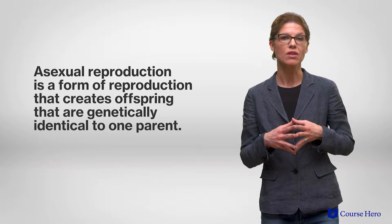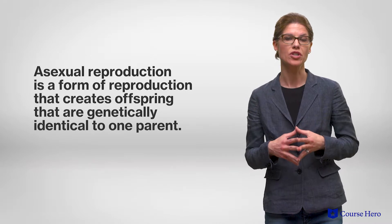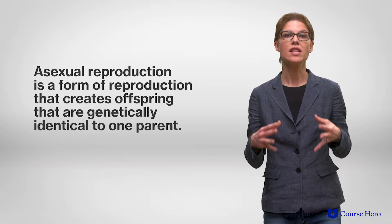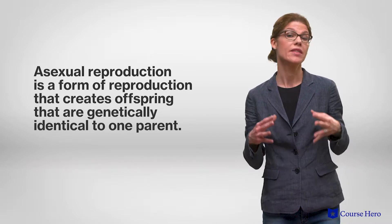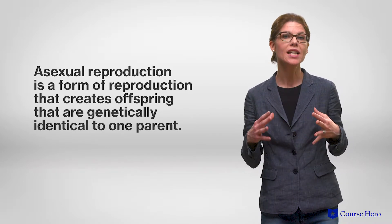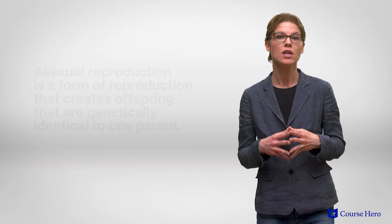Asexual reproduction is a form of reproduction that creates offspring that are genetically identical to one parent, without the need for sperm or egg cells, also known as gametes. It is often a quick process, and various organisms use different forms of asexual reproduction.